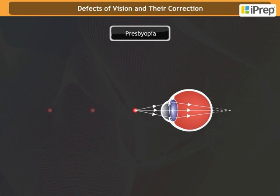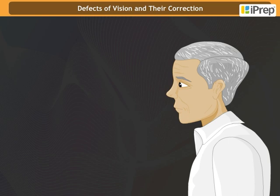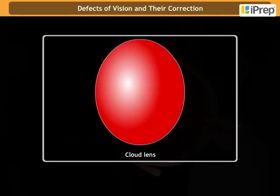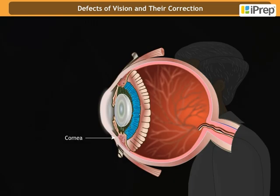Sometimes a person may suffer from both myopia and hypermetropia. Such persons often require bifocal lenses. A common type of bifocal lens consists of both concave and convex lenses. The upper portion consists of a concave lens, and the lower portion facilitates near vision.